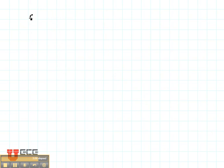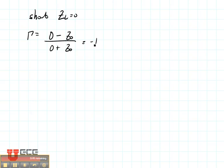Now let's see what would happen if we had a short. When we have a short, the load is zero. So the reflection coefficient is zero minus V0 over zero plus Z0, and that is minus one.